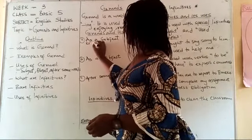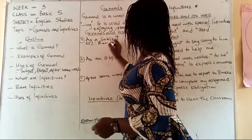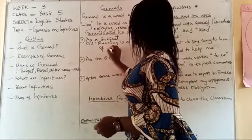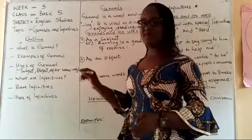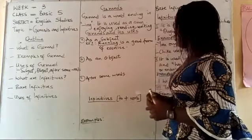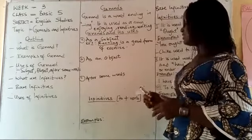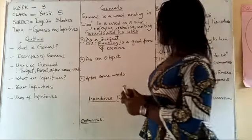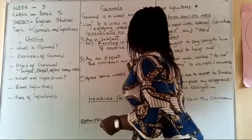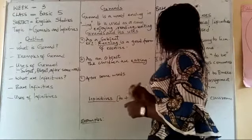Example one — using a gerund as a subject. We can say: 'Running is a good form of exercise.' In this case, you observe that the gerund 'running' is functioning as the subject. The subject is seen at the beginning of the sentence. And when it comes to an object, the children are eating — eating is the object here.